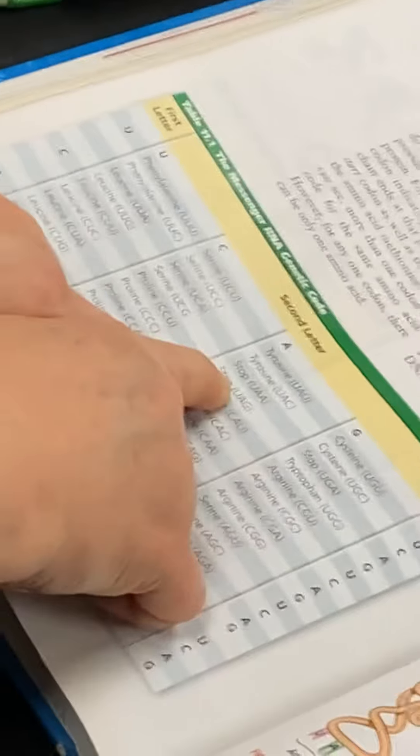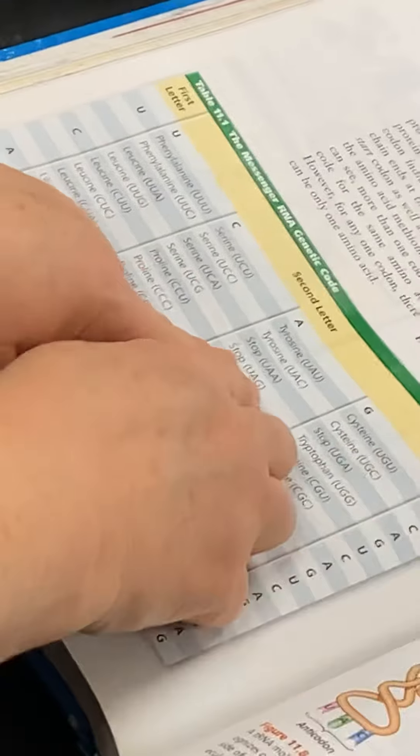So now all three of them meet right here at U-A-G, stop. It's a stop codon. Because it's a grid.